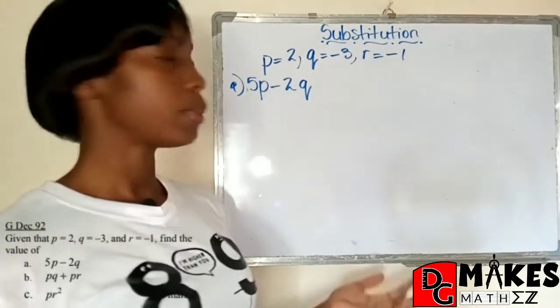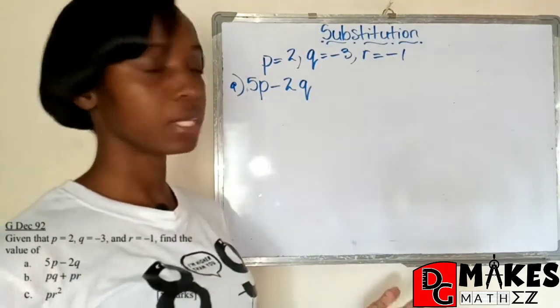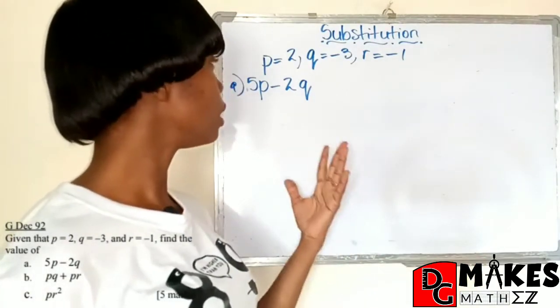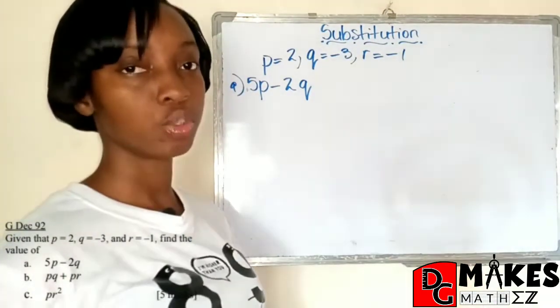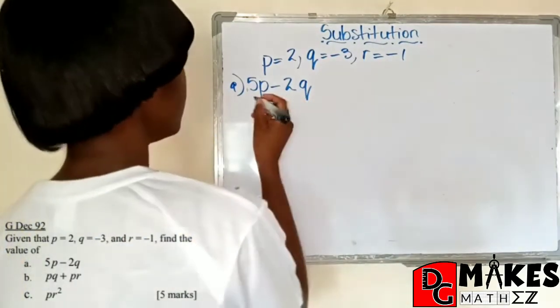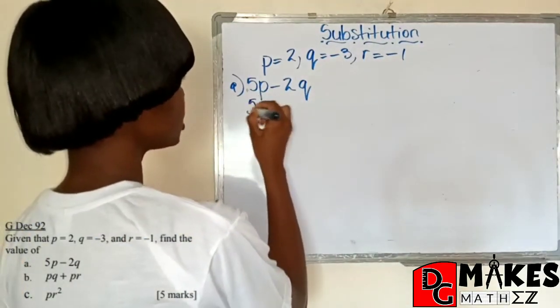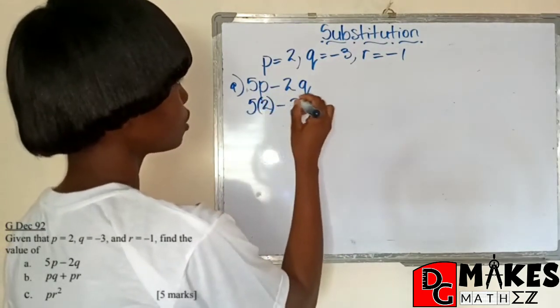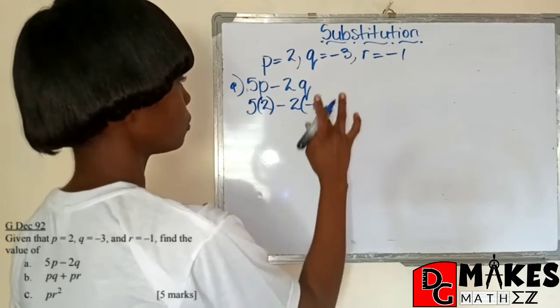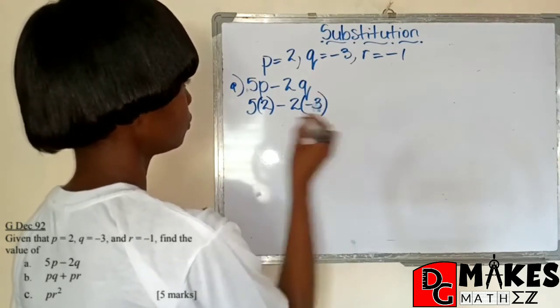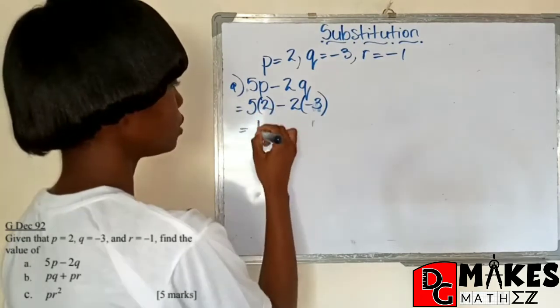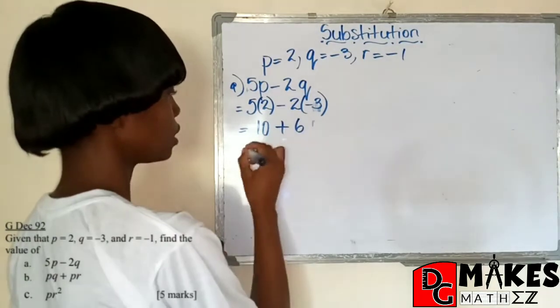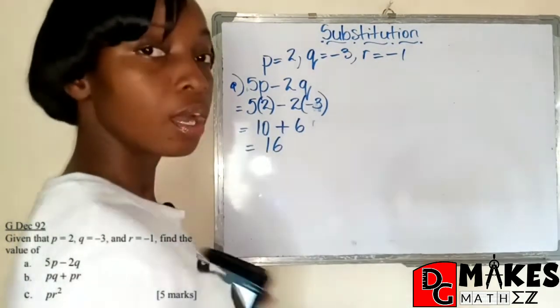One of the things we must remember is that 5P means 5 times P, 2Q means 2 times Q. So as long as we are able to read and interpret what the expression is saying, then we should be well on our way. All right, so here we go. 5 times P, we're going to use our bracket for our multiplication. P is 2 minus 2 times Q, which is negative 3. And that is going to be equal to 10. It's the negative 2 times negative 3, which gives us positive 6. And that's going to be 16.